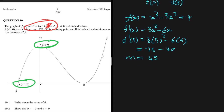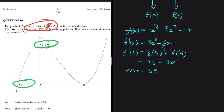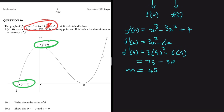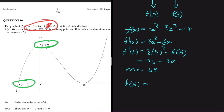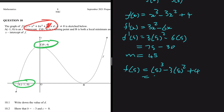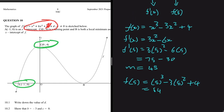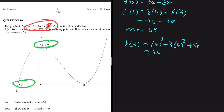Now let's find the y-value at x = 5: f(5) = 5³ - 3(5²) + 4 = 125 - 75 + 4 = 54. So the point is (5, 54) and the gradient is 45.